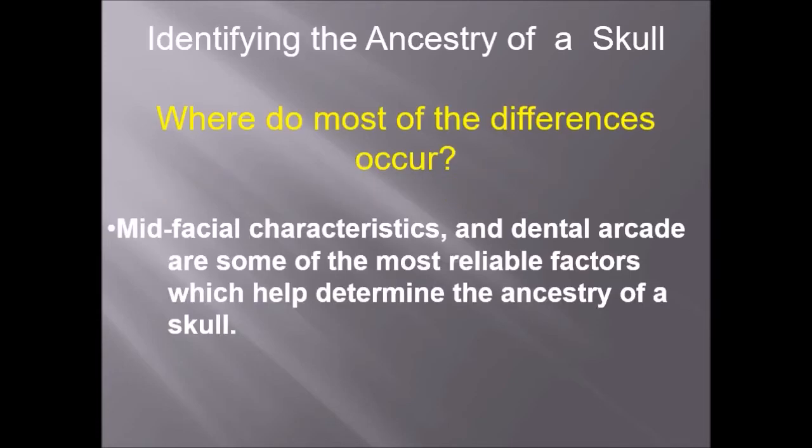What part of the body is best at determining ancestry? By far the best part is the skull. Most of the differences that we see around the world happen in the skull. Mid-facial characteristics are one of the biggest — that is the middle of the face, meaning around the nose. The dental arcade, the teeth themselves, offer up some other things. All sorts of parts of the skull tell us where that individual came from.